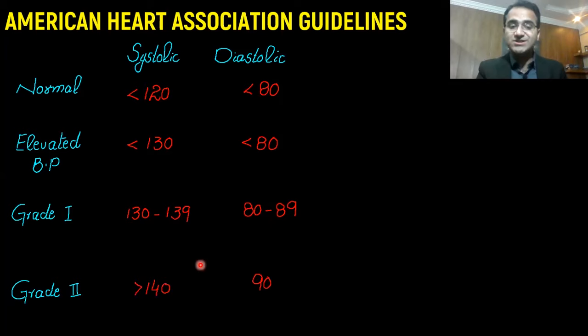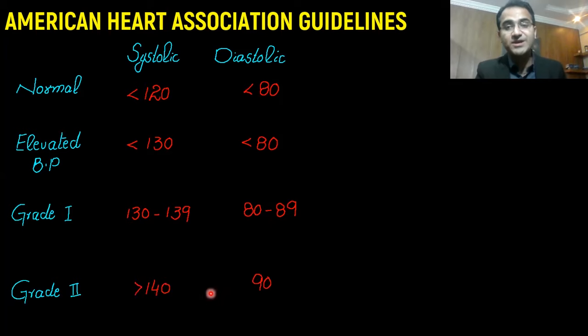If the patient has blood pressure from 130 to 139 systolic and diastolic from 80 to 89, this is labeled as grade 1 hypertension. Grade 2 hypertension is where systolic blood pressure is greater than 140 and diastolic 90.